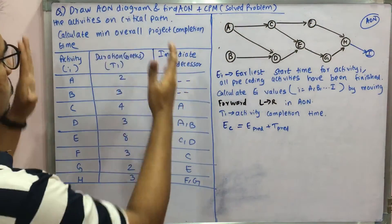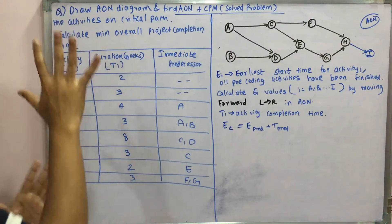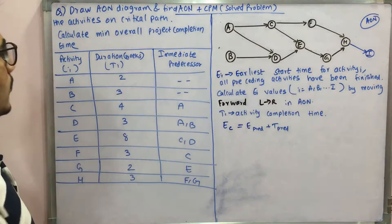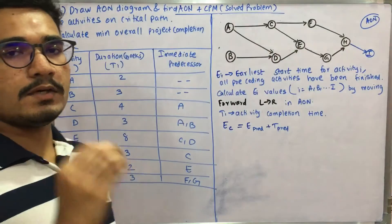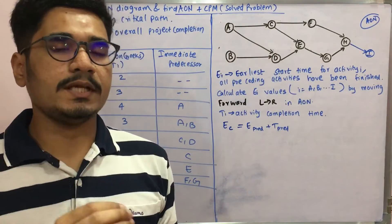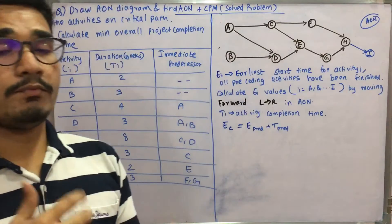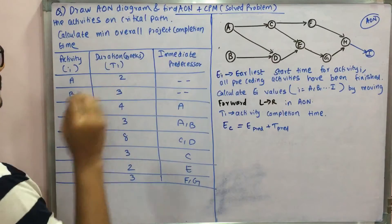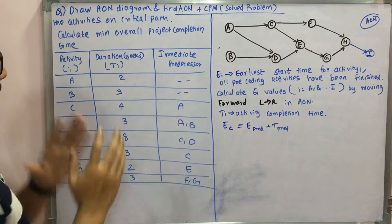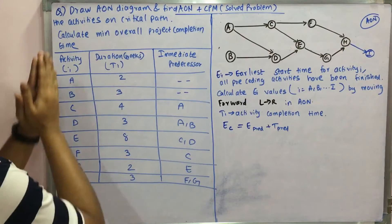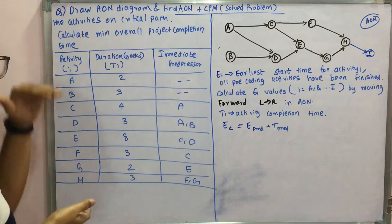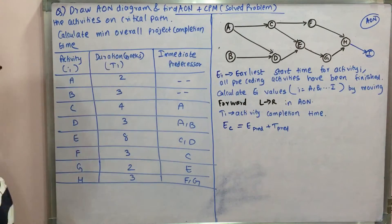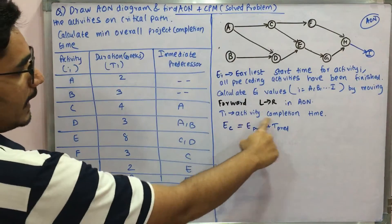First, let's look into the problem. You need to draw an AON diagram — Activity on Node — and you need to find the activities on the critical path. The critical path is the path which takes the longest route and the minimum amount of time for completion of a project. You need to calculate the minimum overall project completion time. You have been given a table with three columns: the activity, the duration given in weeks represented by TI, where TI is the activity completion time.